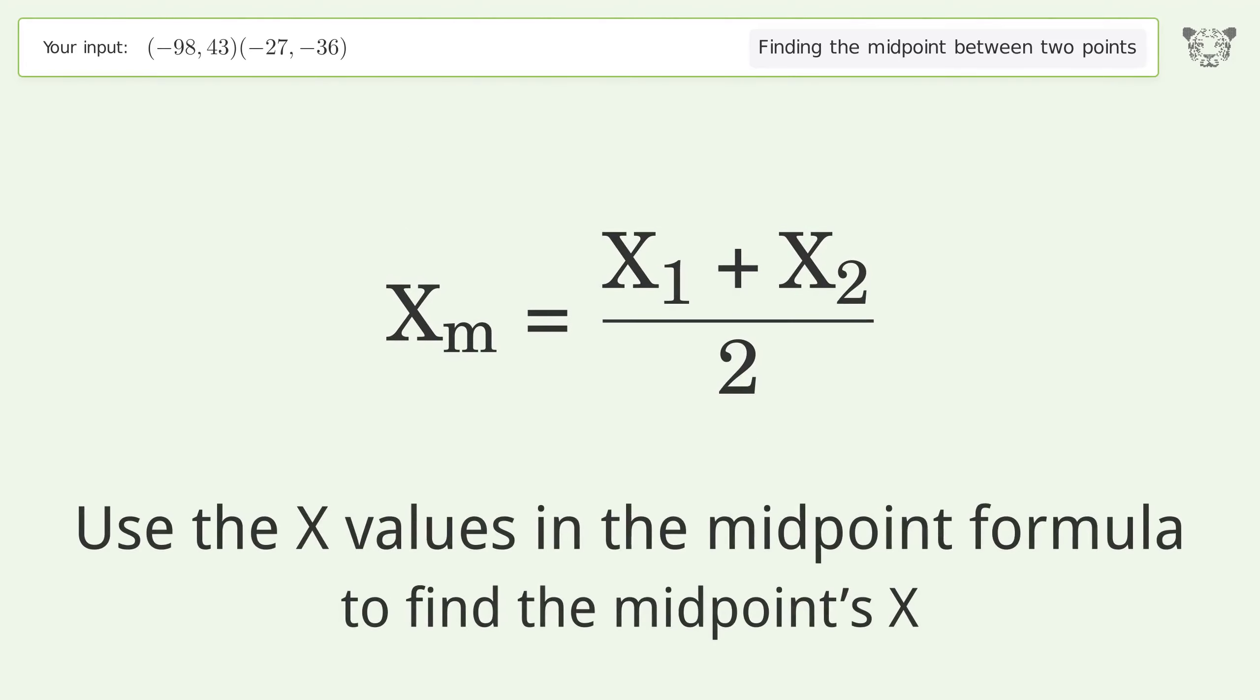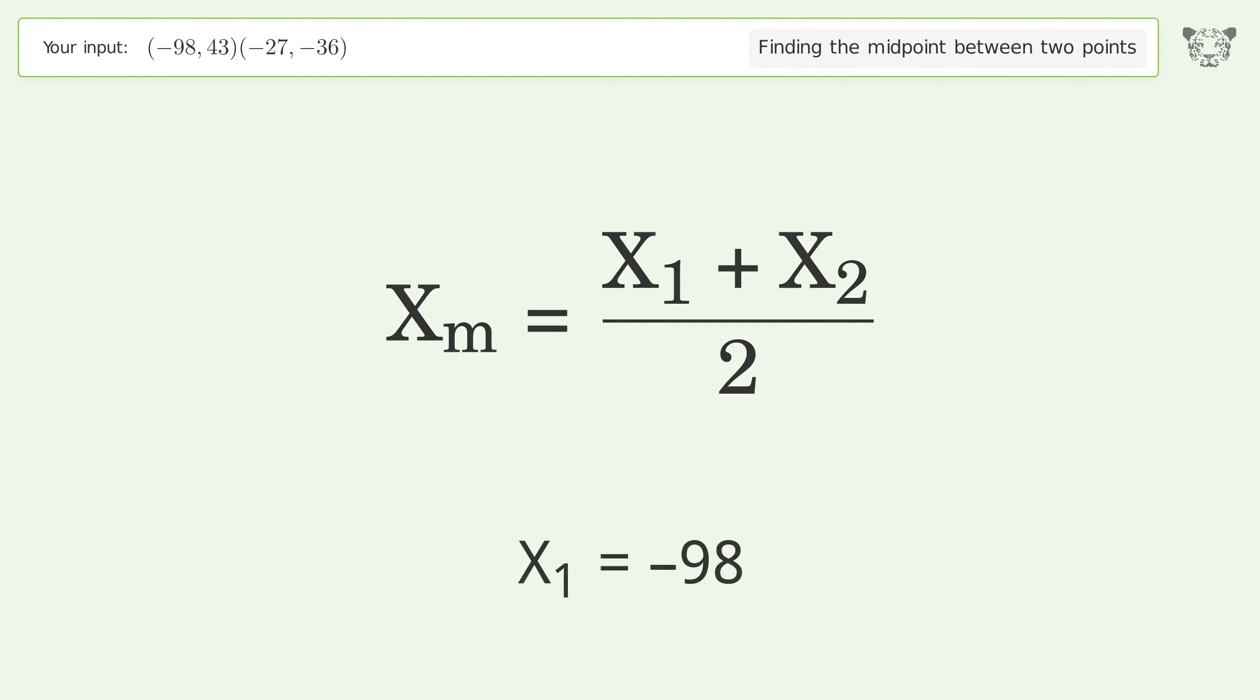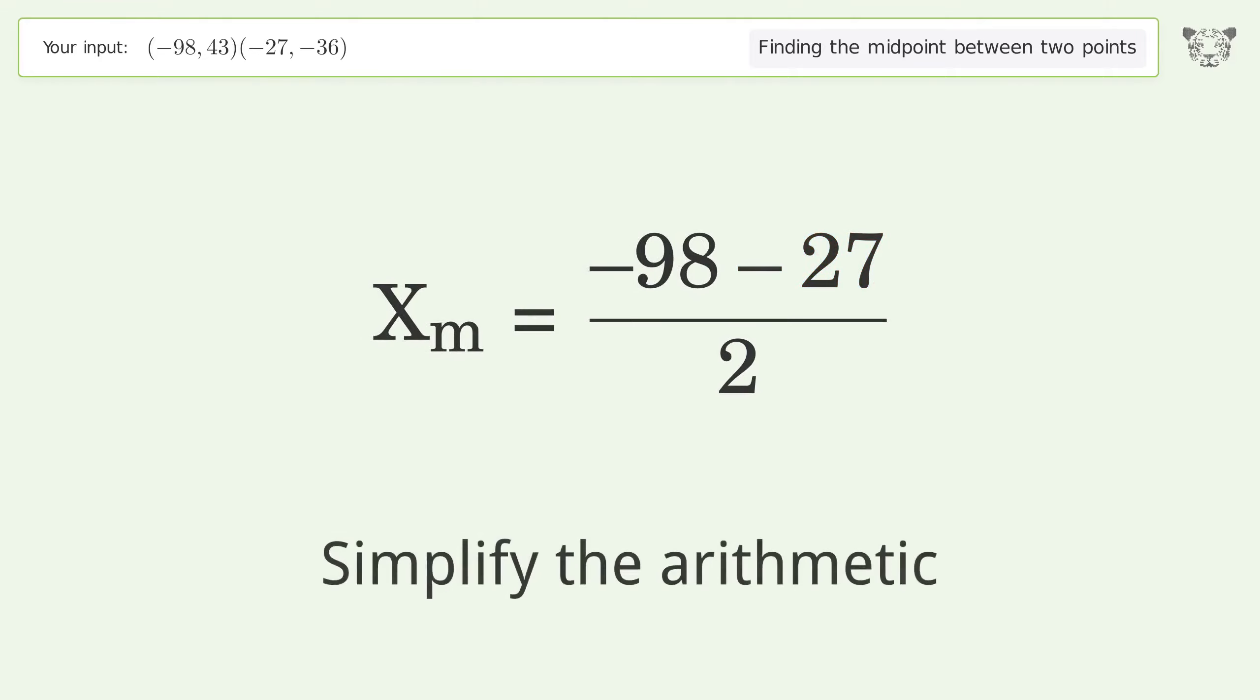Use the x values in the midpoint formula to find the midpoint's x. X1 equals negative 98, x2 equals negative 27. Simplify the arithmetic.